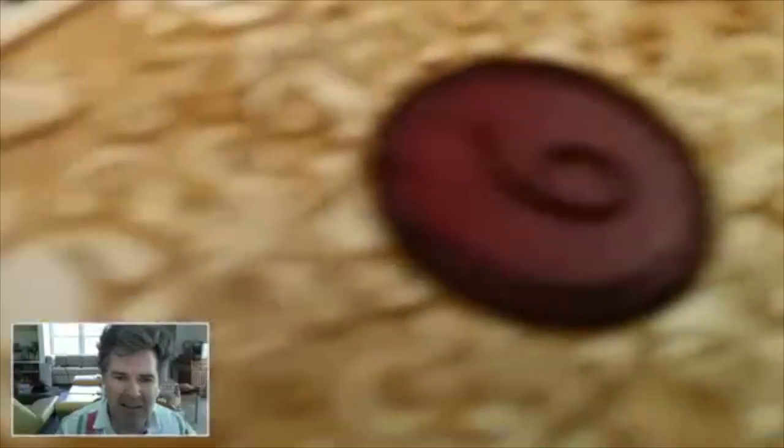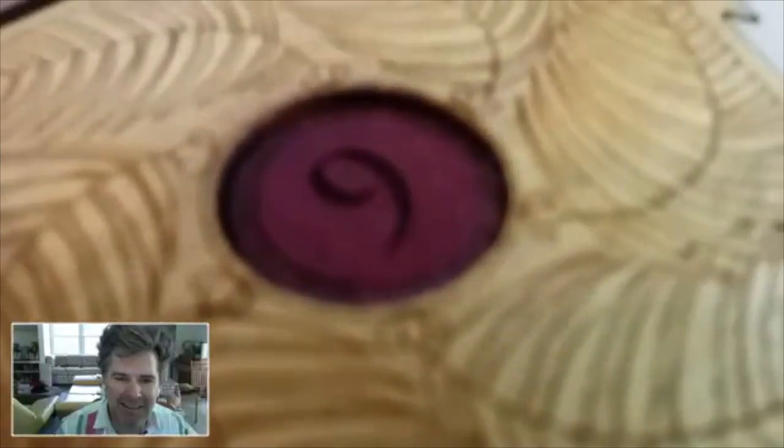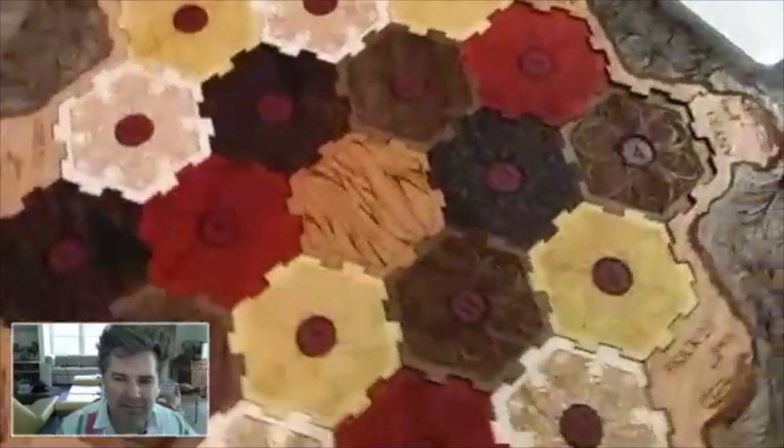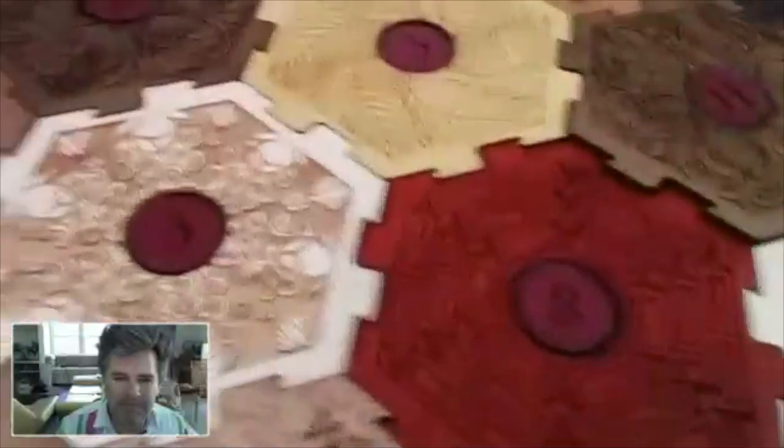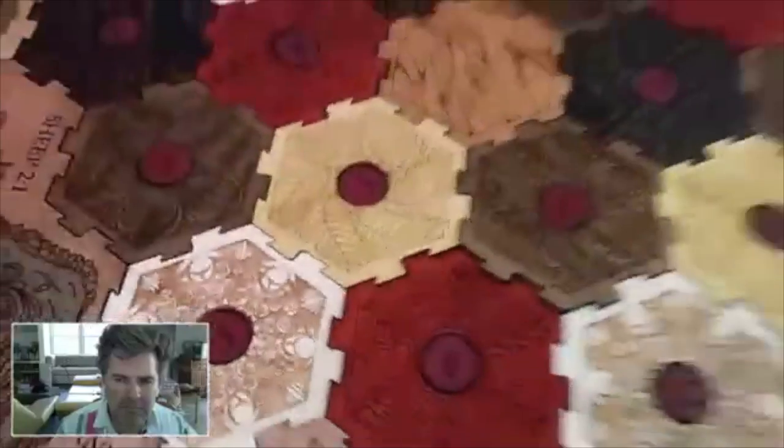One really neat thing is this is not painted at all - these are just different woods. You've got walnut, you've got padauk, it's an African hardwood. This is wenge, and it's just naturally this color with just a coat of spray shellac. There's no sanding. These are purple heart.